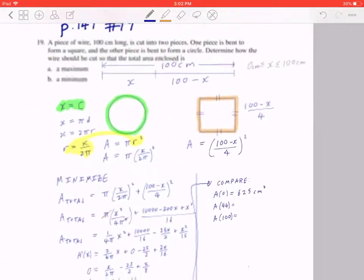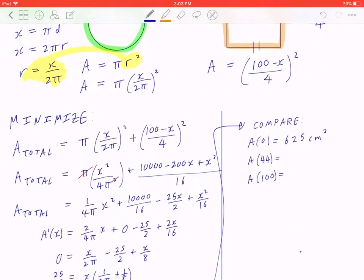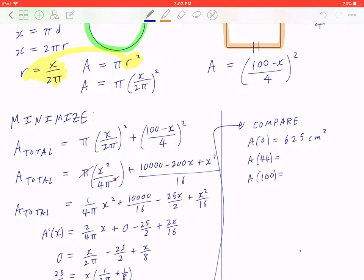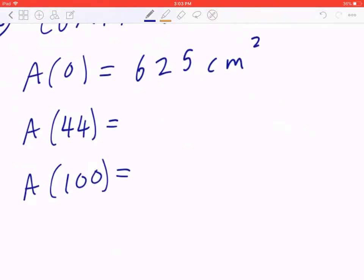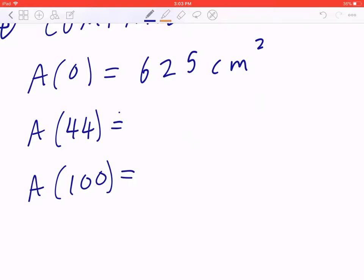Now, if you plug 44 back in, and again, you can take the calculator, plug it back to the first line, this will give you approximately 350 centimeters squared. Last but not least, if you take the entire wire and you plug it back in, this is approximately 796 centimeters squared.